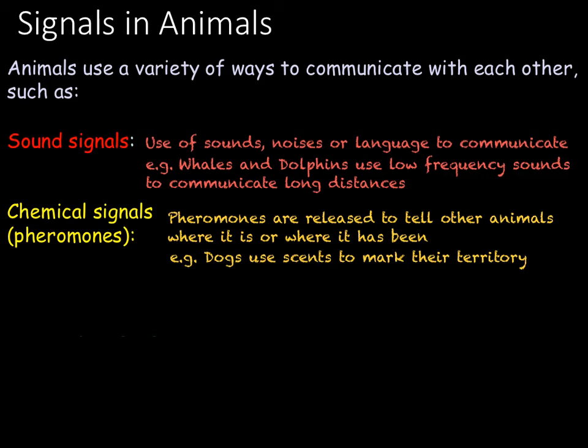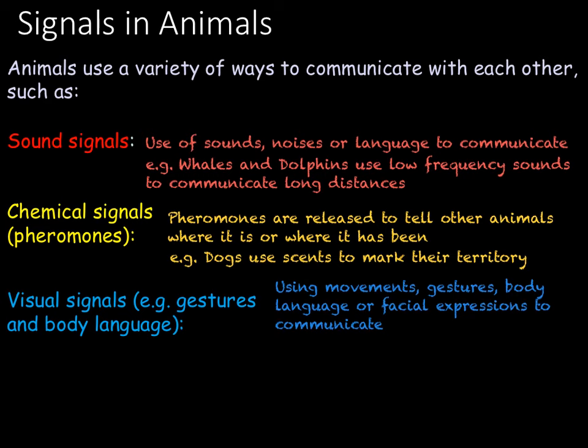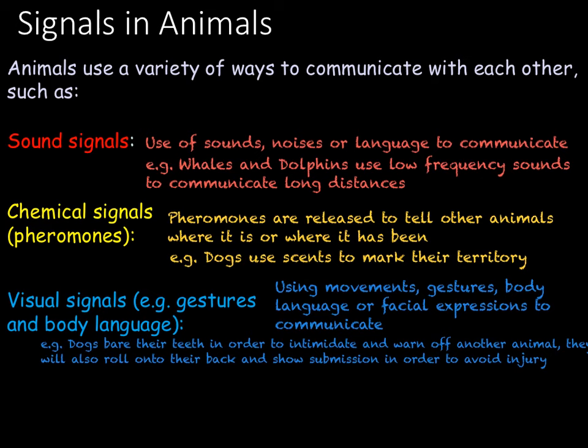One of the most common ways that animals communicate is through visual signals. In mammals, a very common example is using gestures and body language. Some animals will use this to intimidate others in order to avoid a fight — for example, chimps do this by staring and raising an arm. Dogs will bare their teeth to show aggression, once again trying to avoid a fight. However, if they do get into a fight, a dog will often roll onto its back to show that it's submissive, admitting defeat and preventing injury.